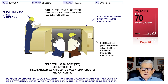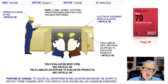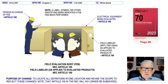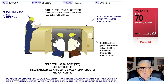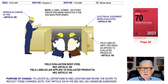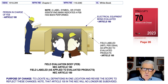This illustration deals with Article 100, and we're on page 26 of the NEC. The purpose of this change was to locate all definitions in one location and basically reverse the scope to reflect these changes. The definitions will no longer be in Article 100 Part 1, Part 2, and Part 3. They'll be arranged in a systematic, alphabetical order where appropriate, making it easier to look up a particular definition or term that relates throughout the code.